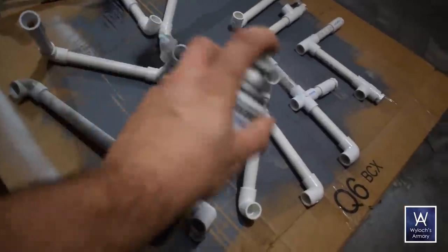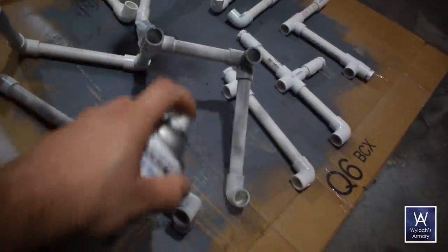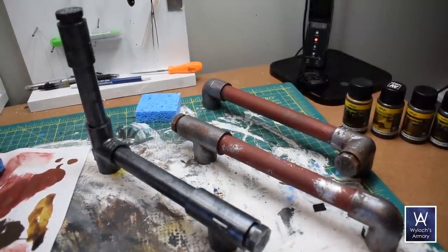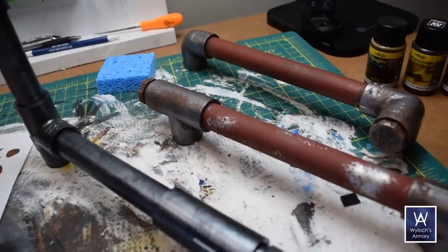Krylon and Rustoleum both make fine matte primers. Then I experimented with a few different approaches to see which I would like best, and so we'll dive in in just a moment, but first, real quick, it's time to sell out.